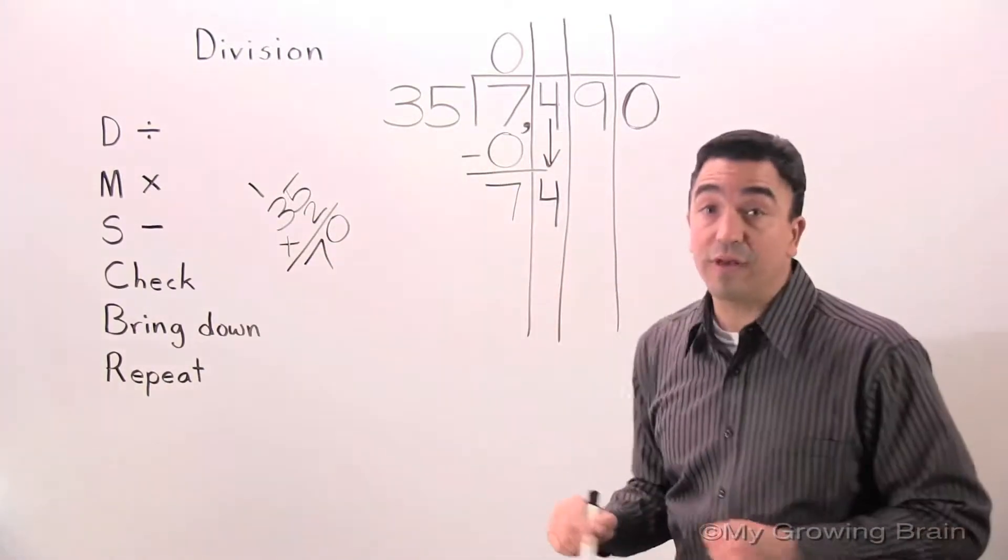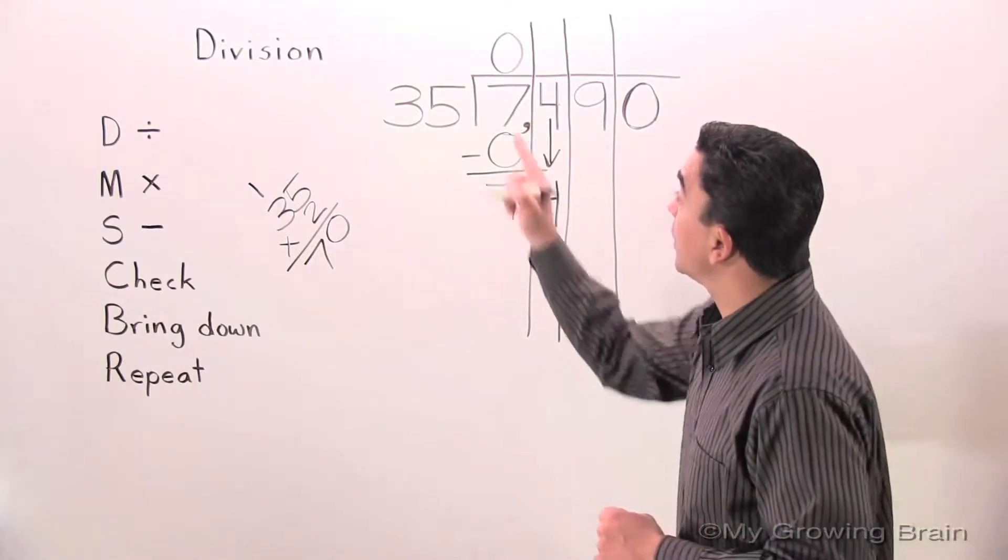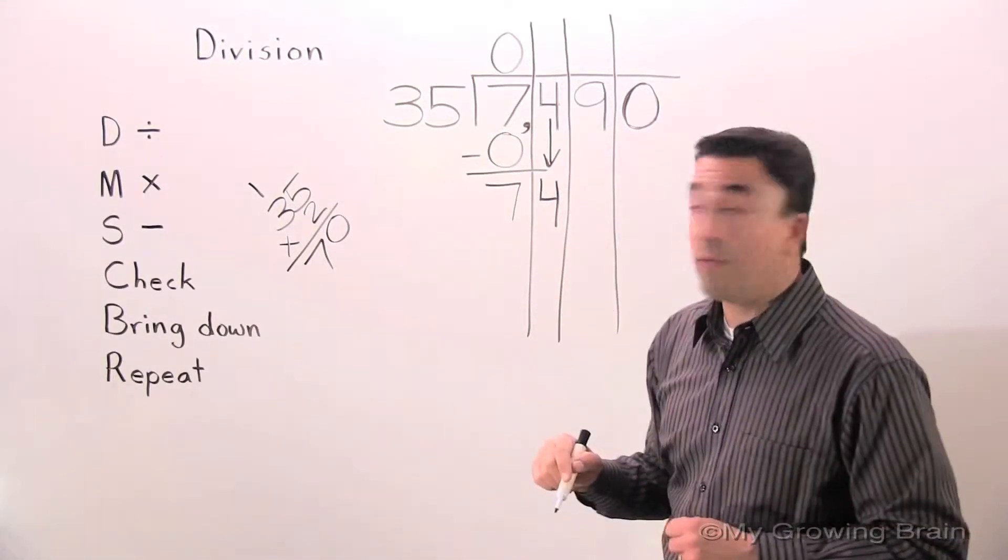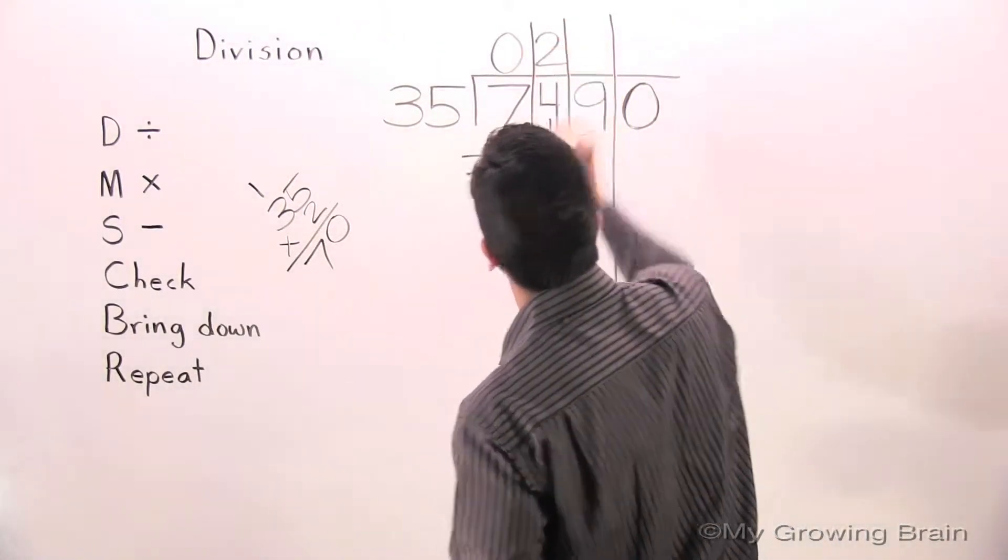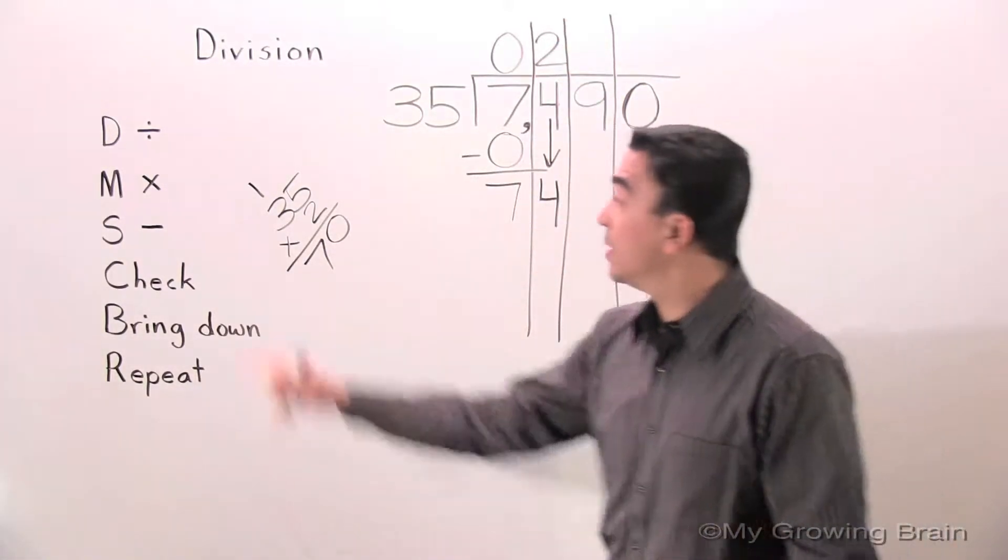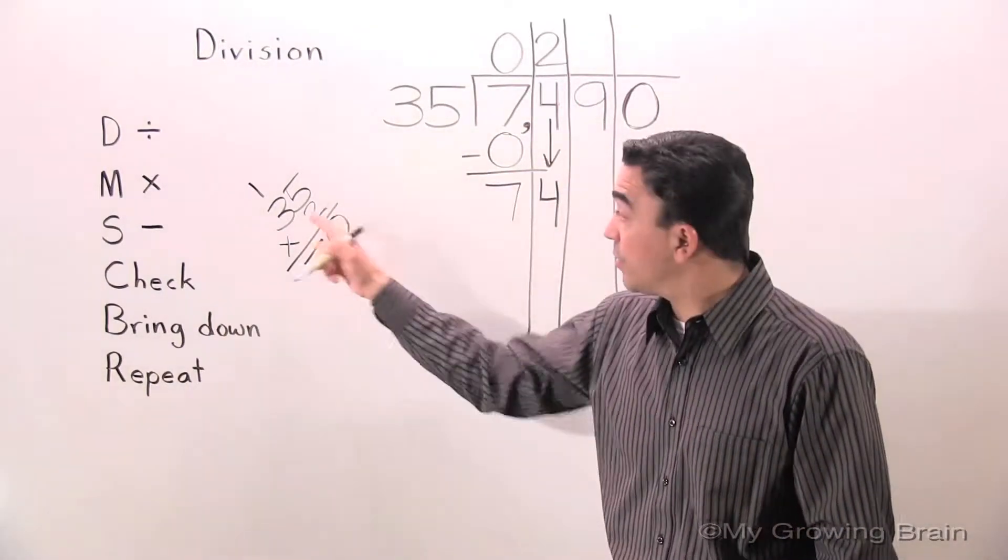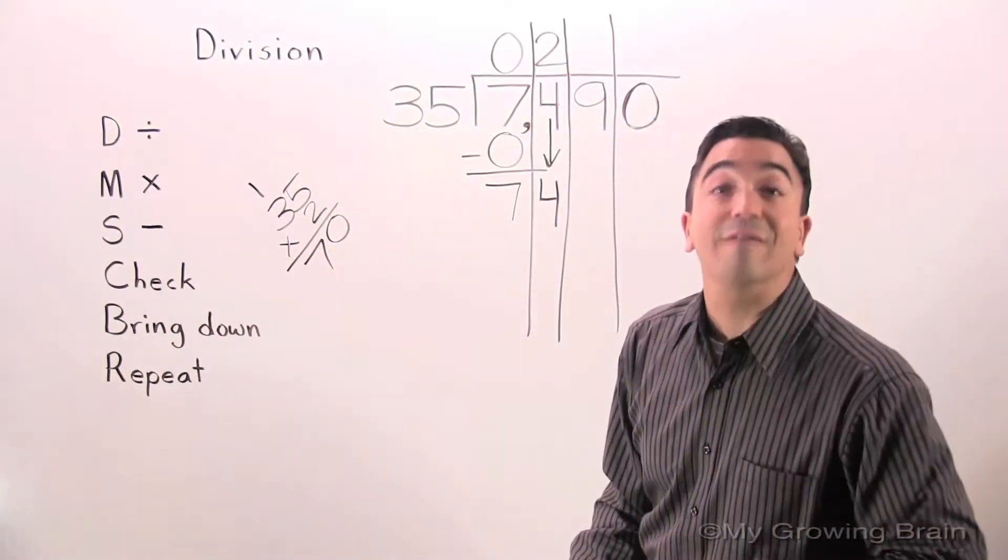70. 70 is close to 74. Therefore, I know that 35 goes into 74 two times. Next step. Multiply. 35 times 2. We know that 35 times 2 is 70.